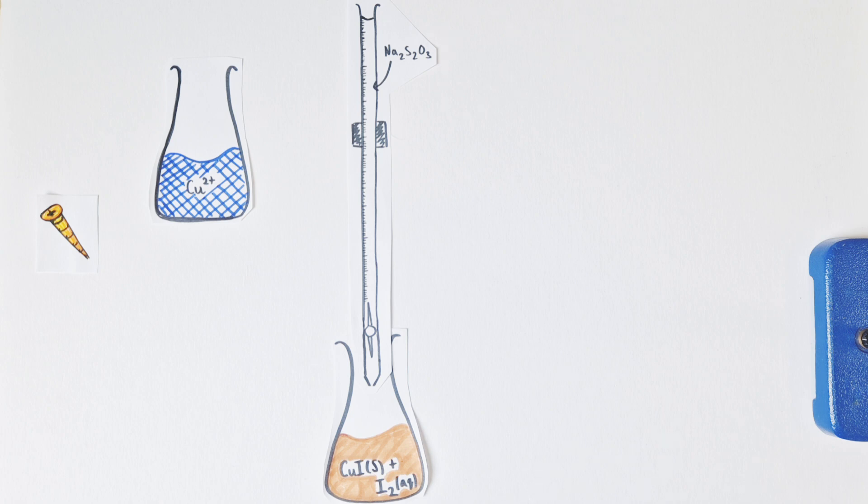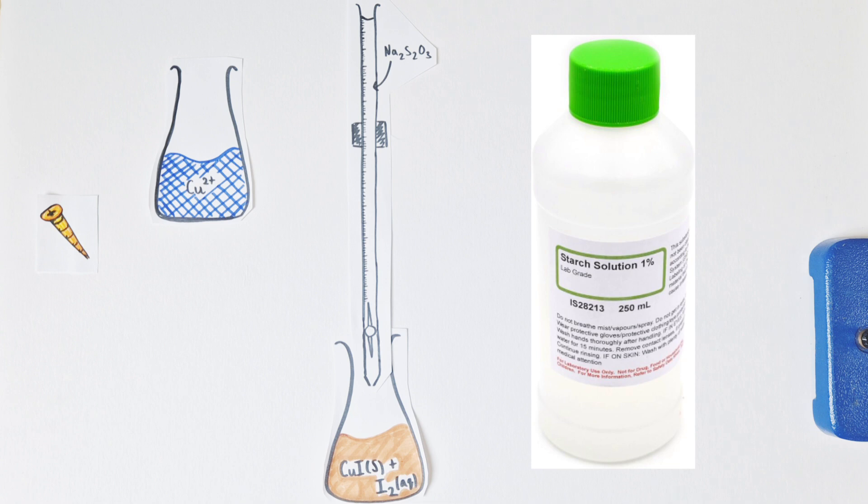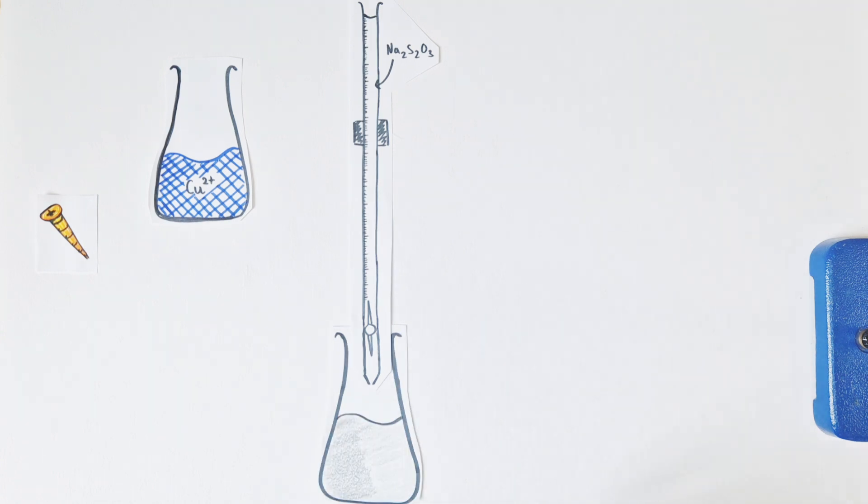The problem being it's really hard to tell exactly when that light yellow color fades and all the iodine has been reacted away. And that's why we add some starch. We add that starch solution to our conical flask quite late in the experiment as that light yellow color is really starting to fade away.